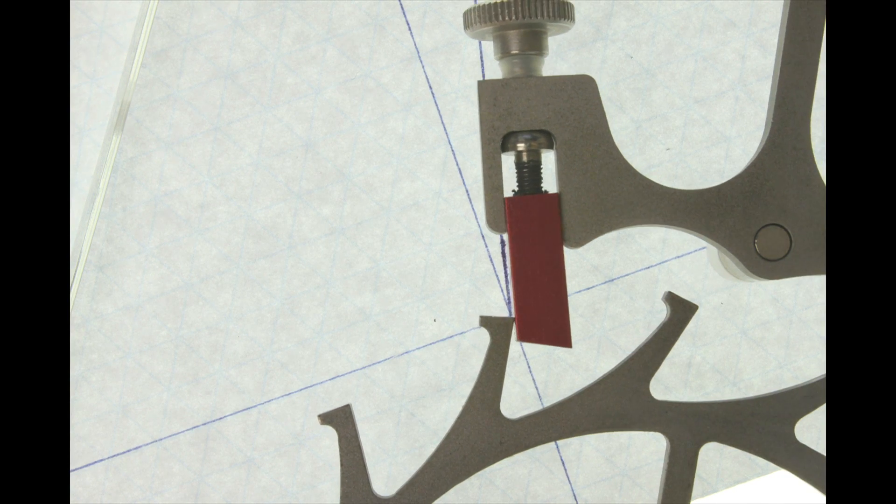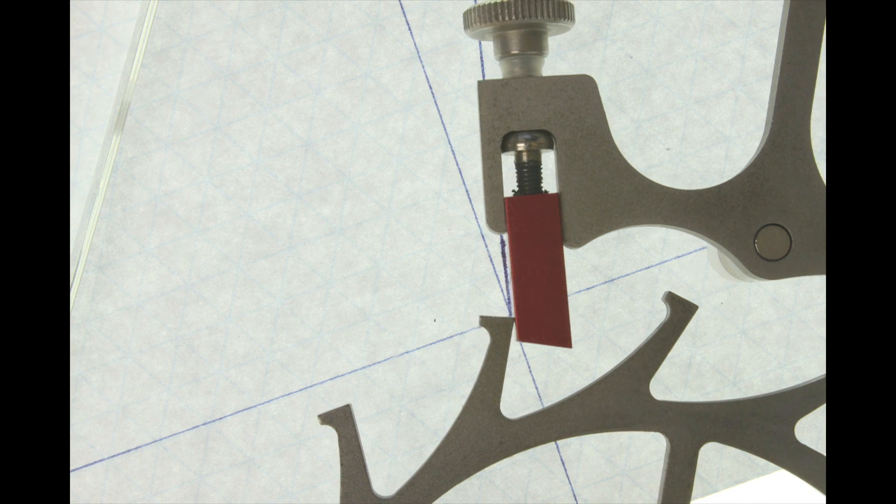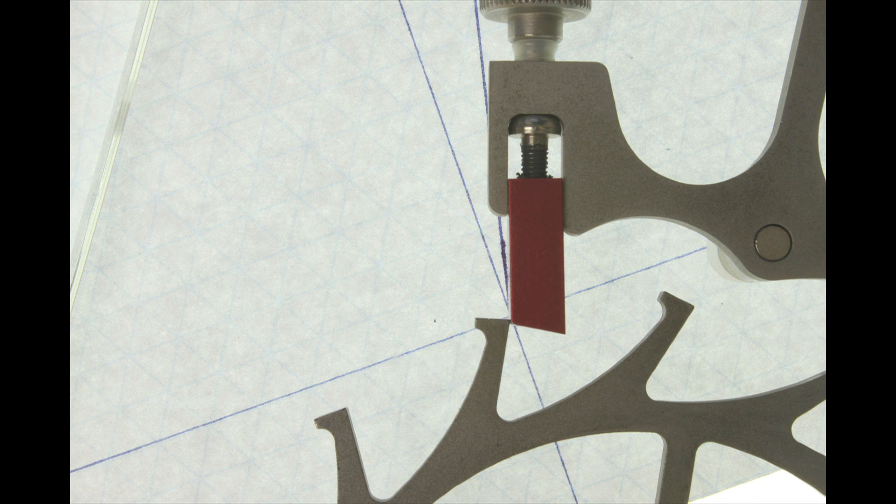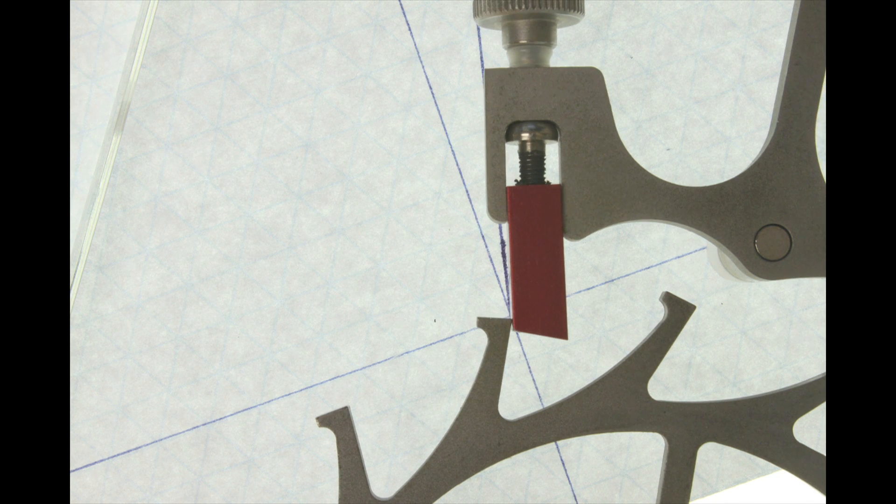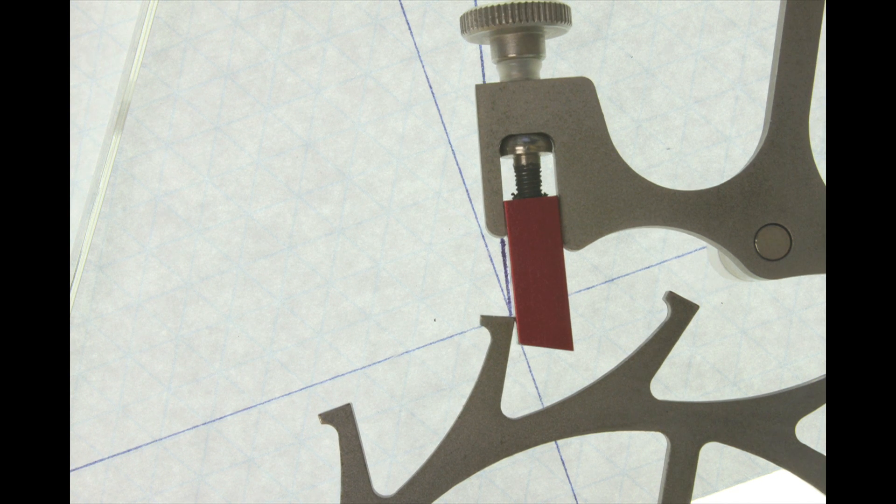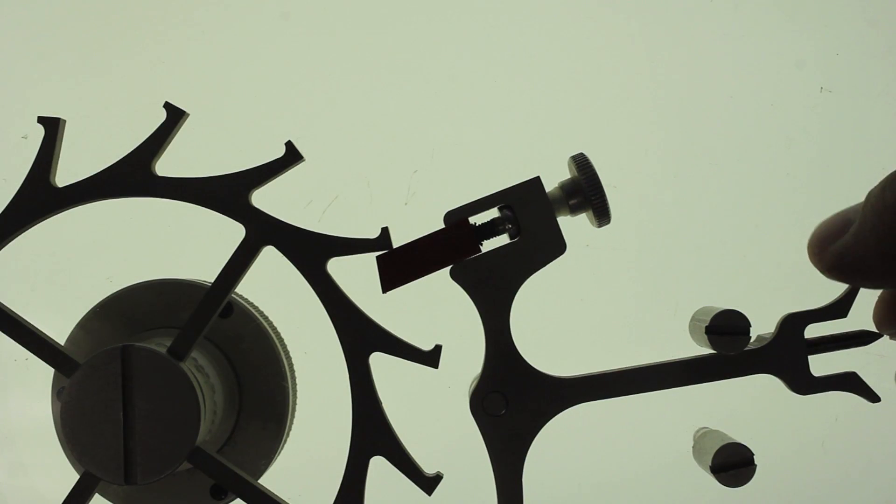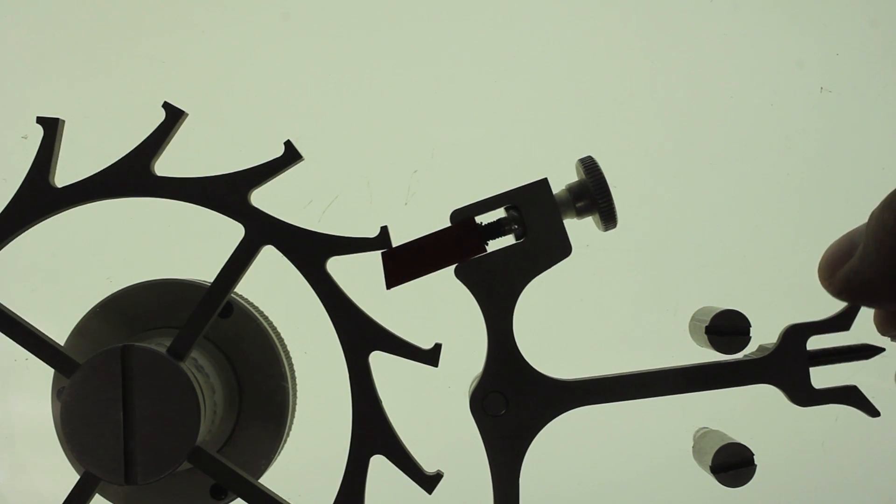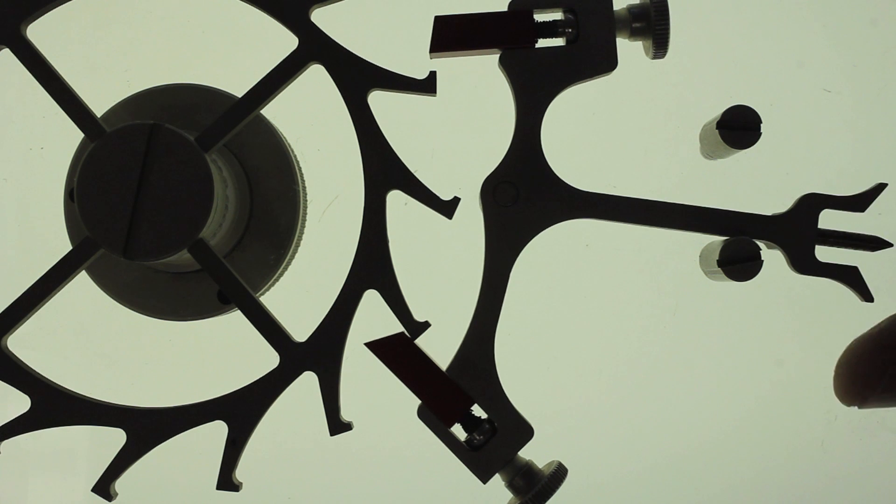The angle of draw results in the locking plane being inclined relative to the pallet arbor. When the escape wheel tooth presses on the locking plane, the pallet stone is drawn deeper into the escape wheel to the point of total lock. You can see the escape wheel going forward slightly as the pallet goes deeper into the escape wheel.